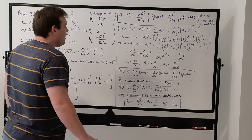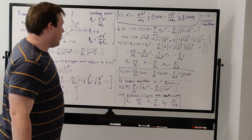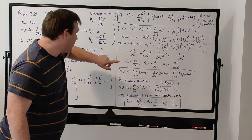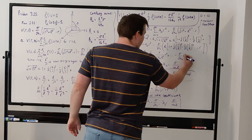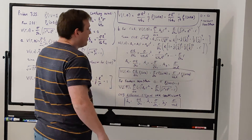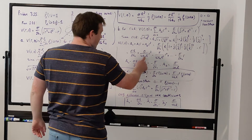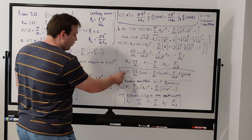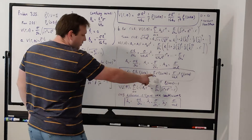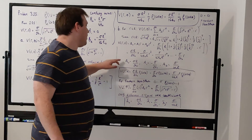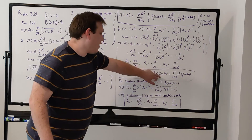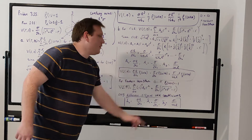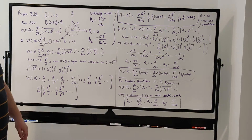Doing a term-by-term comparison: a₀ is the term with no little r, so a₀ equals sigma R over 2 epsilon-naught. a₁ is the coefficient of r, which gives a₁ equals minus sigma over 2 epsilon-naught. a₂ is the coefficient of r², so a₂ equals sigma over 4 epsilon-naught R. Now we can write the general potential for the northern hemisphere by tagging on the Legendre polynomials: the zeroth, first, and second Legendre polynomial with their respective coefficients.